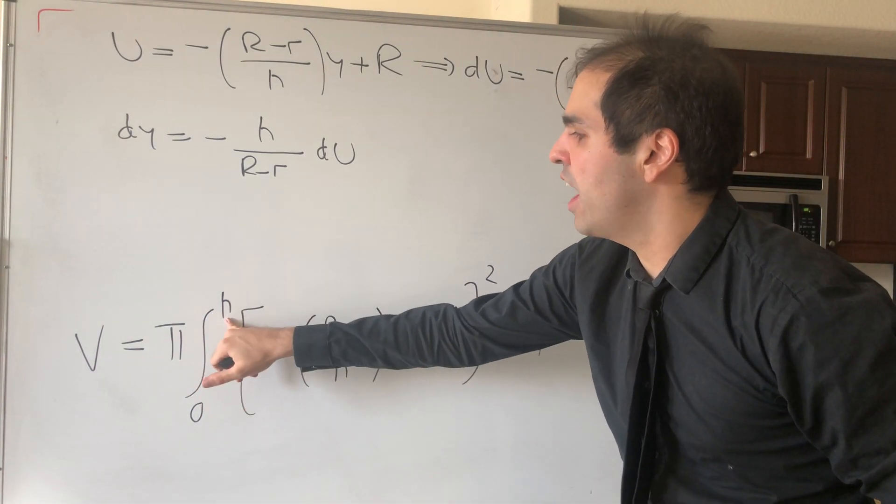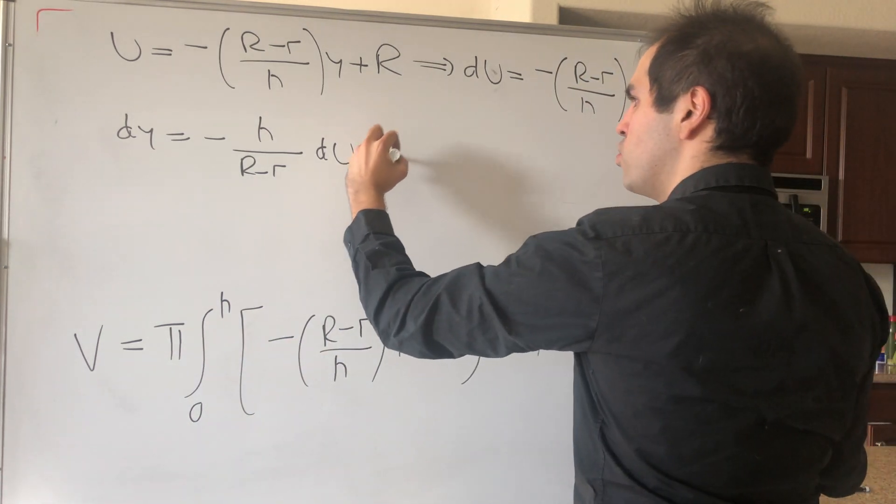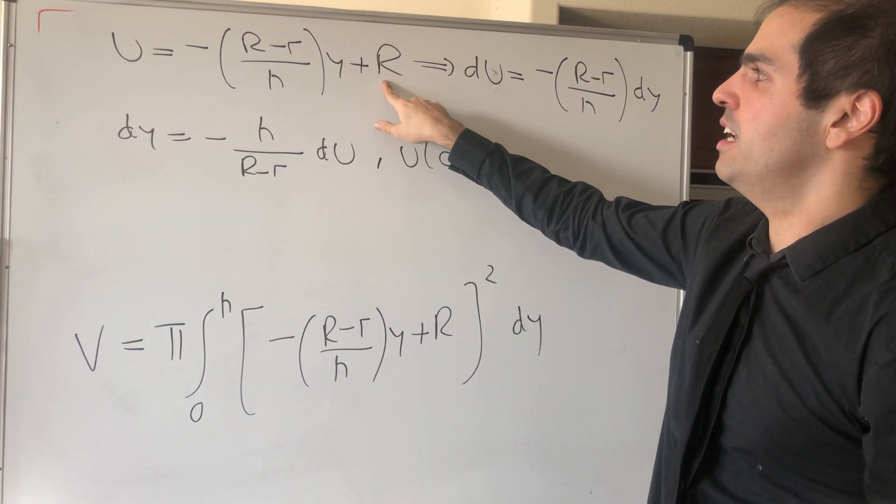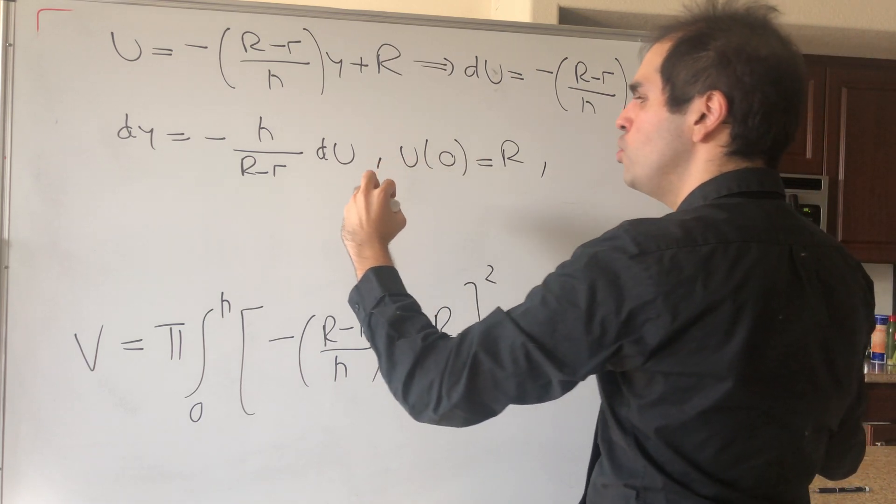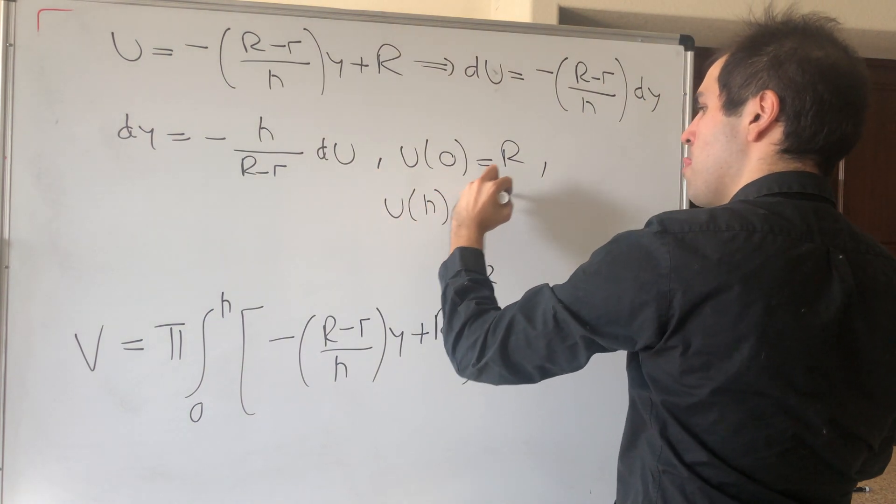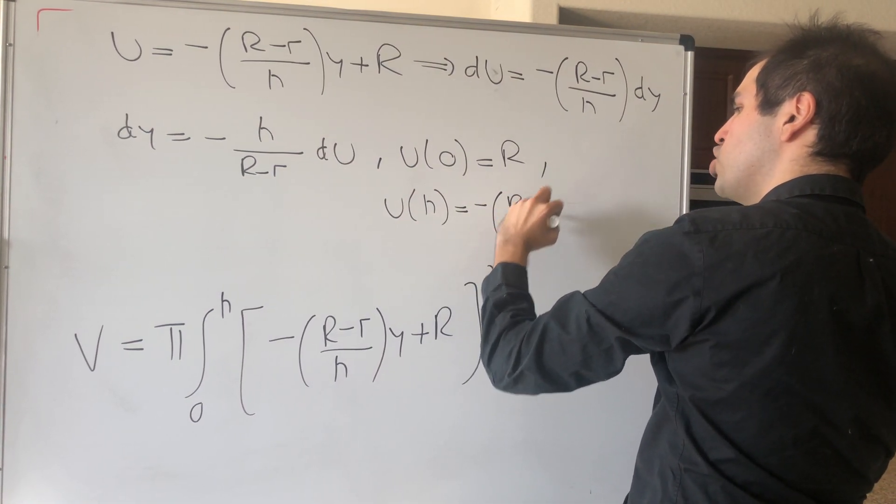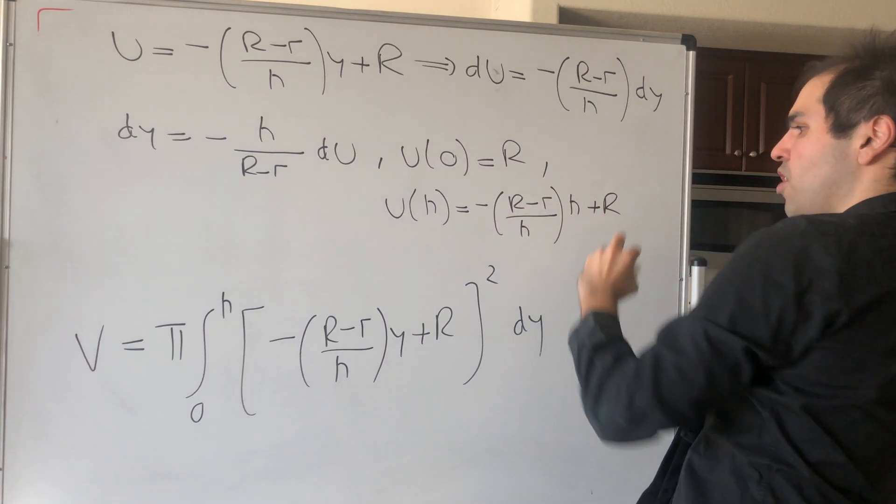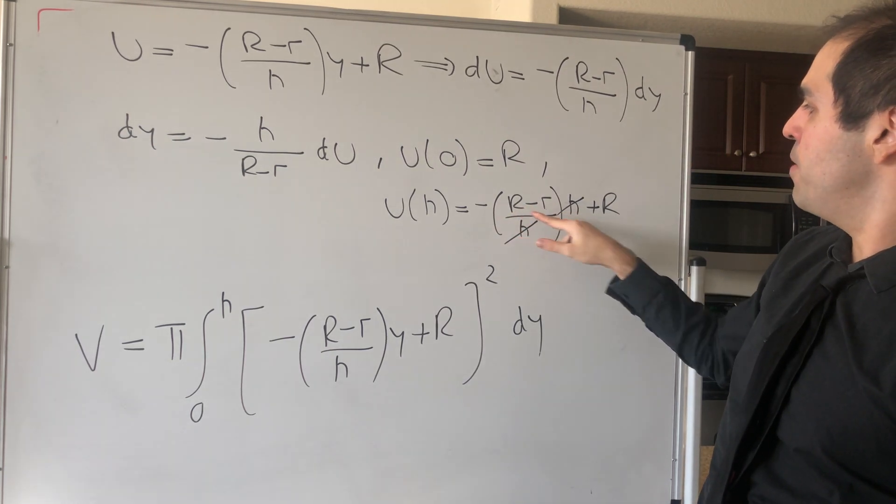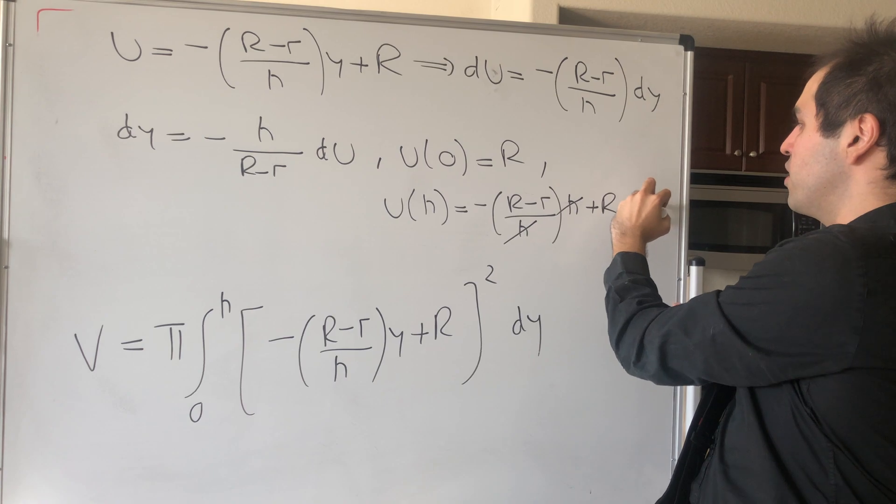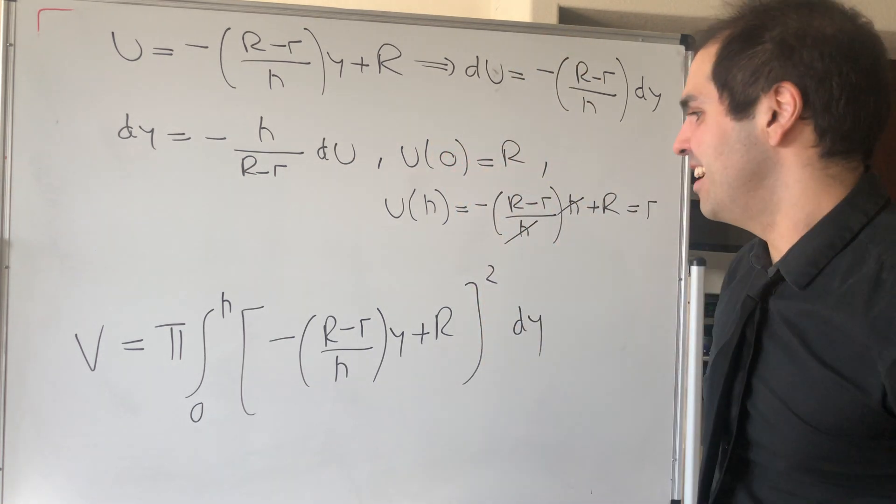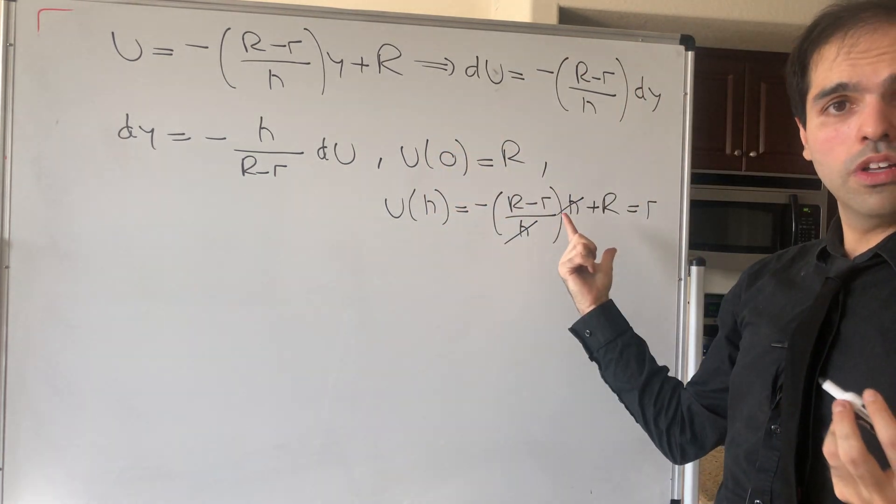And then lastly, we just need to figure out what happens at the endpoints. So u of 0 actually becomes just the top of the line, which is R, and u of h, you see it's minus (R minus r) over h times h and then plus R, and then the h cancels out, and you get r minus capital R plus R, so you can actually show that this simplifies to little r. And in fact, just like our line at h, we had a little r. And so what does the integral become?